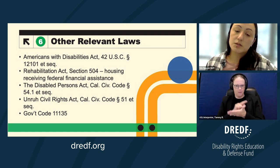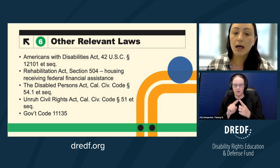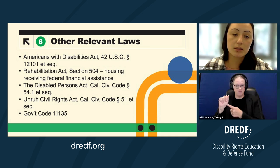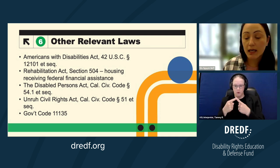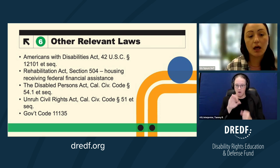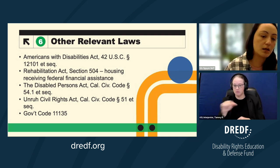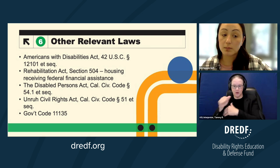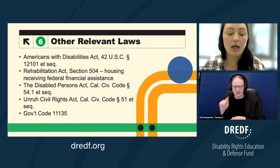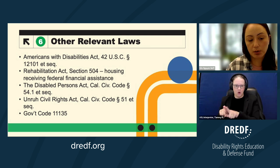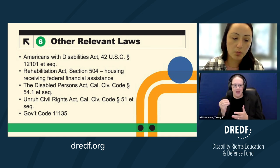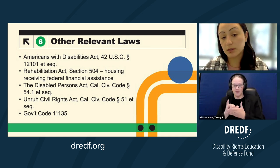Other relevant laws include the ADA, Section 504 of the Rehabilitation Act, the Disabled Persons Act (California's state equivalent of the ADA), the Unruh Civil Rights Act — which prevents discrimination for all protected classes including disability — and Government Code Section 11135, which also prohibits disability discrimination. You should be aware of all of these in the context of unlawful detainers or an affirmative case for disability discrimination in housing.